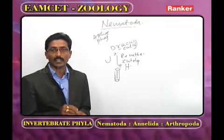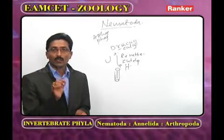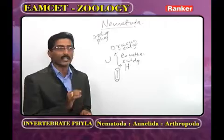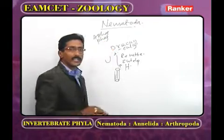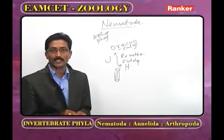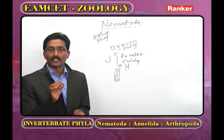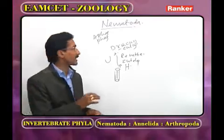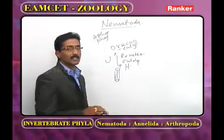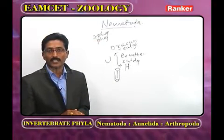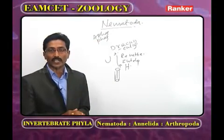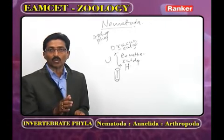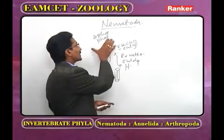In the Phasmida, amphids are present but pore-like. Well-developed phasmids are present. Examples of Phasmida include Ascaris, Oxyuris, Ankylostoma, and Dracunculus.